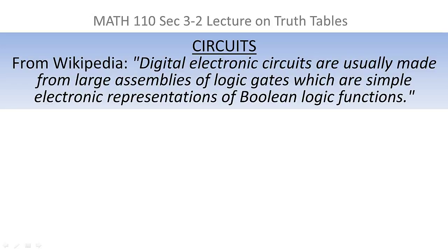Now that we know a little bit about truth table logic, let's turn our attention to an interesting application. I pulled this definition from Wikipedia. It says digital electronic circuits are usually made from large assemblies of logic gates, which are simple electronic representations of Boolean logic functions.